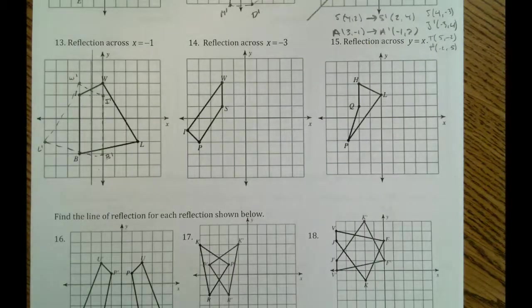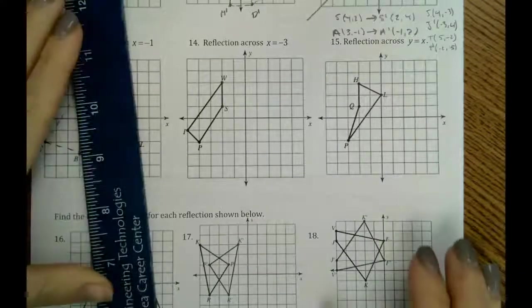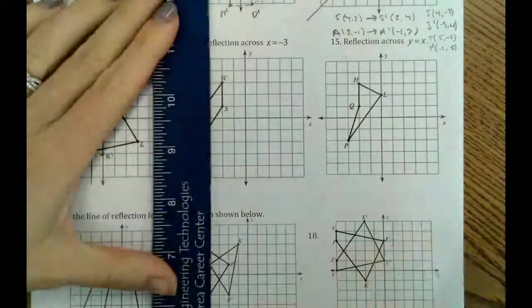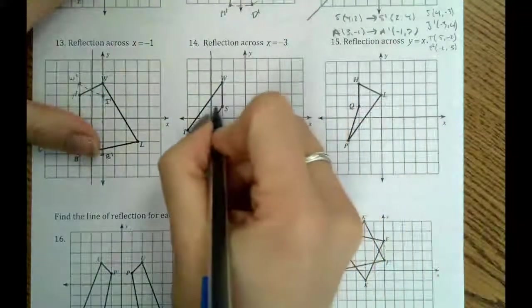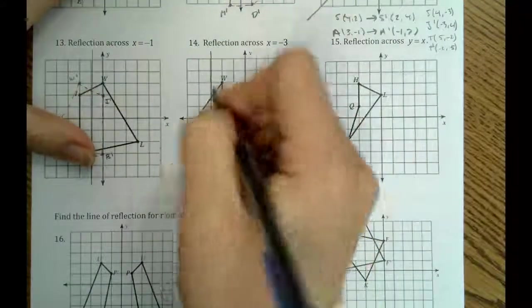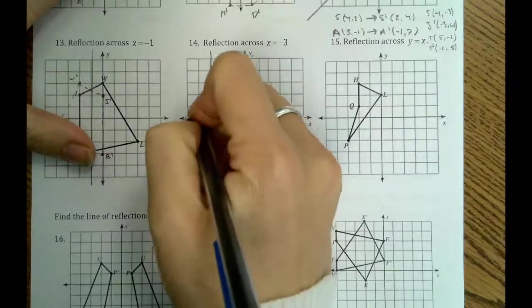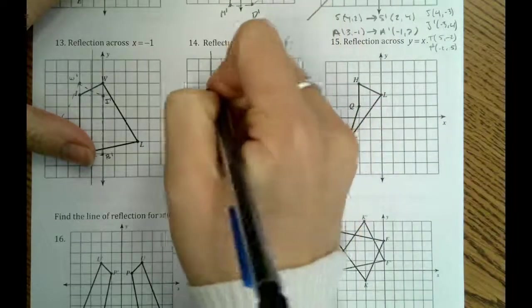So for 14, we're reflecting across the line x equals negative 3. So here, again, we just count. So s is 1 away, so our new s is over here, 1 away to the left. w is 1 to the right, so we'll go 1 to the left.